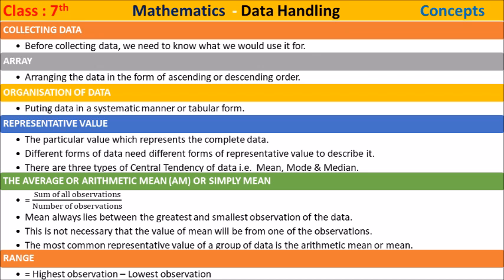Range is the difference between the highest and the lowest observation of the data. That is, range equals the highest observation minus the lowest observation.